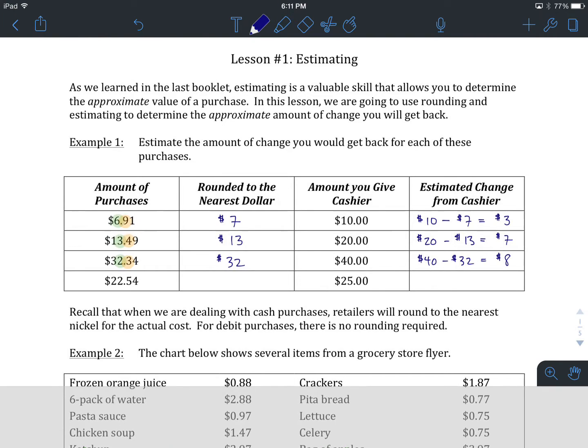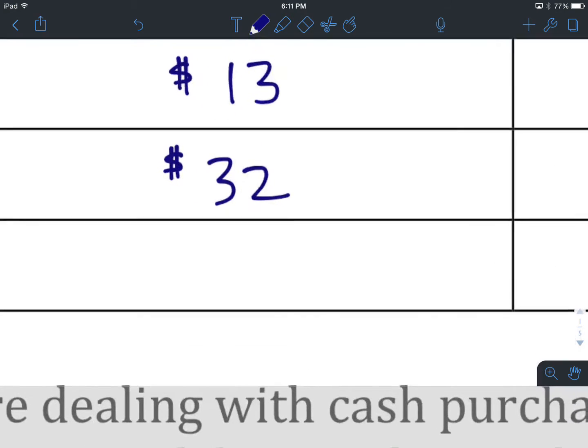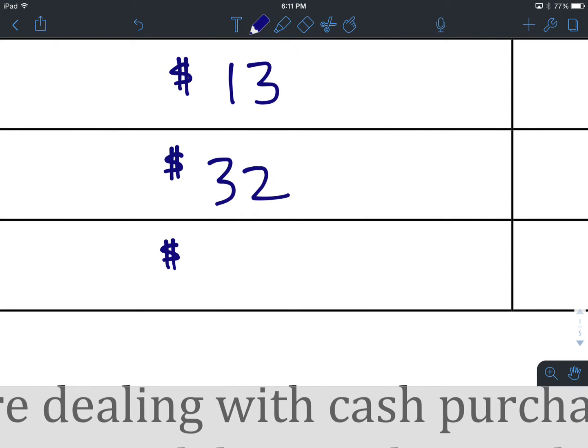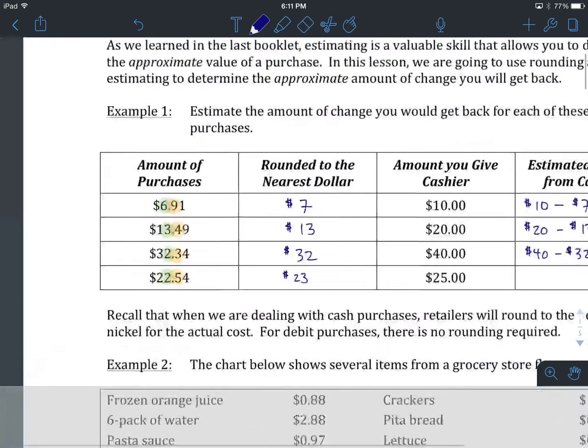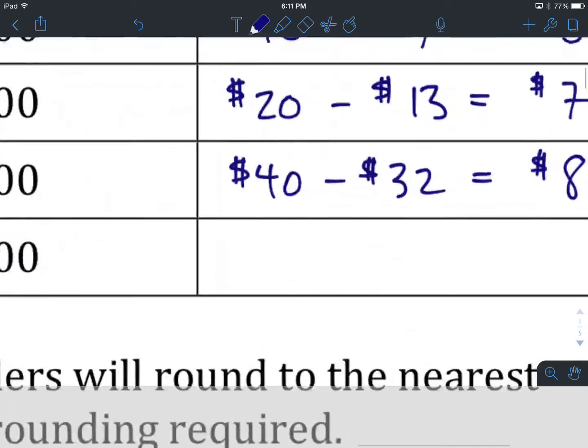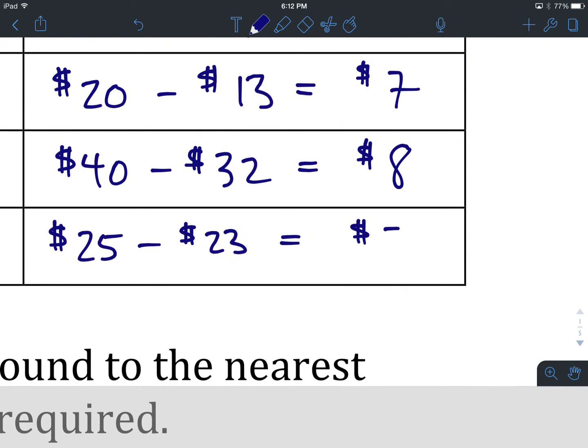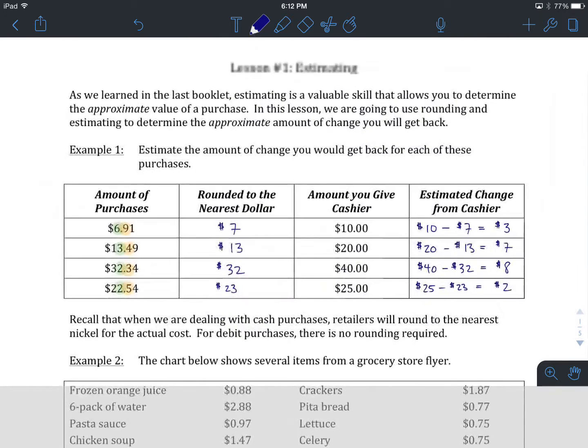Okay, you've come back. We are going to round $22.54 to the nearest dollar. That means this two right here. We look to the digit after it. The five forces us to round up. So we are going to have $23 approximately. We give the cashier $25. The estimated change is the difference between them. $25 we give. The $23 estimate is going to give us approximately $2 in change.